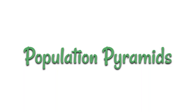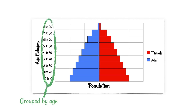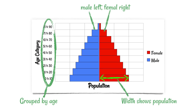Population pyramids are a handy way to graphically represent information about a population. In this graph, the population is grouped into age categories, and the width of each bar shows the size of each population. It's separated into male and female — by convention, male is on the left and female on the right.